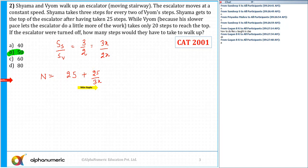So 25 steps - to cover 25 steps, Syama is taking how much time? 25 by 3x. And in the same time, if the escalator is moving with a speed of E, it is equal to... Byome is taking 20 steps, and the time taken by Byome to take 20 steps is 20 by 2x. And in this much amount of time, the escalator can travel how much steps? Multiplied by E.